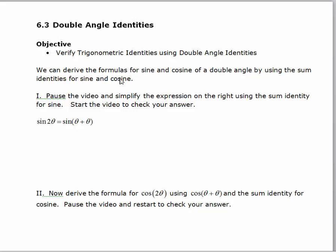Actually, more than verify, we're going to derive them. I'm going to ask you to start off by looking at the sine of double an angle. The sine of double theta is equal to the sine of theta plus theta. So take a minute, pause the video, and use the sum identity for sine to rewrite the sine of theta plus theta. Then simplify as much as you can and then start the video again.